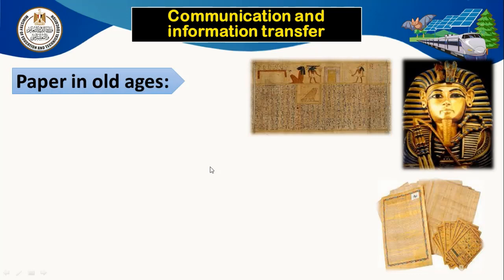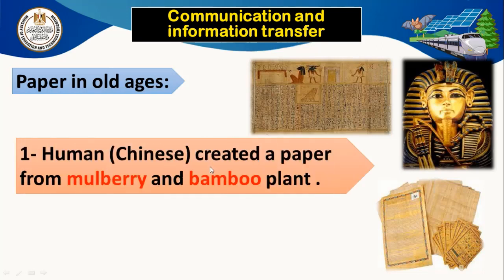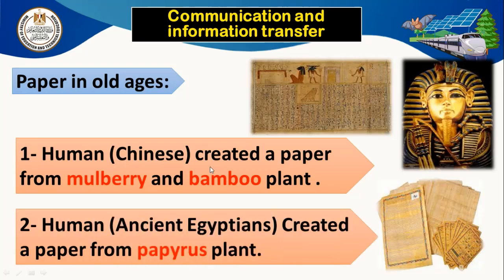In old ages, people used different kinds of paper. الصينيون كانوا بيستخدموا ورق مصنوع من mulberry وبامبو. والـ Ancient Egyptians created paper from the papyrus plant — نبات البردي. ولحد دلوقتي اللي بيروح رحلات في الأهرامات بيشوف ورق البردي بيتباع للسياحيين، وممكن نشتريه.